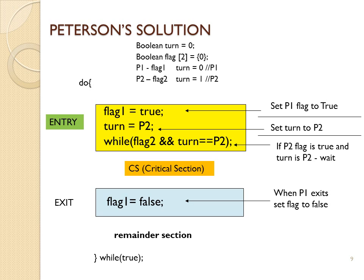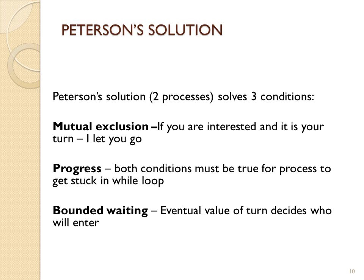And then if P1 happens to be the one to get into the critical section, P1 would then clear its flag, which then in turn would allow P2 to get into the critical section. So again, I repeat: please take a look at the notes, take a look at the explanation of the Peterson solution that leads up to this. This is a good solution to the critical section problem, does satisfy all three of these conditions for a good solution, but it does only work for two processes.